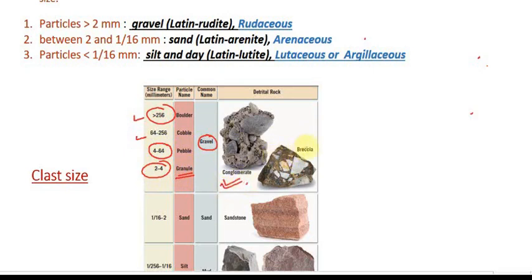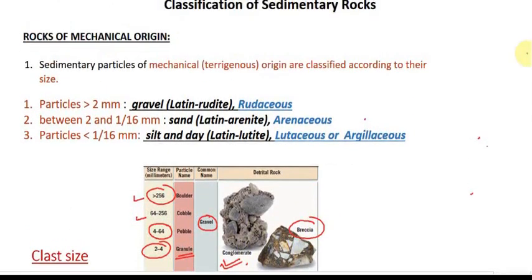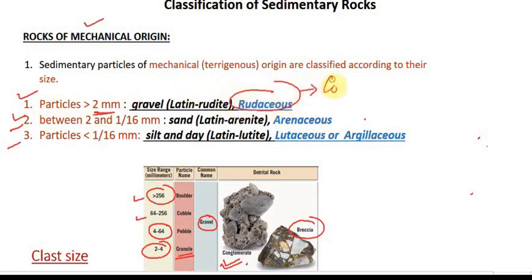When gravel-sized particles lithify, we call the resulting rocks rudaceous rocks, which include conglomerate and breccia.